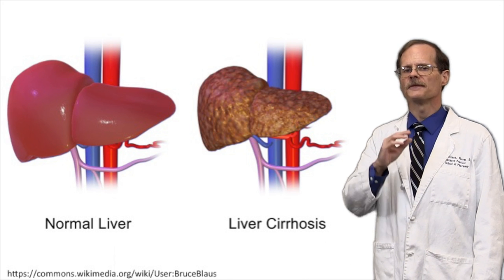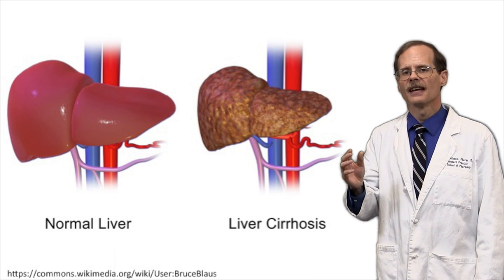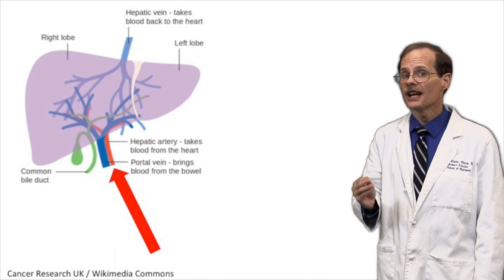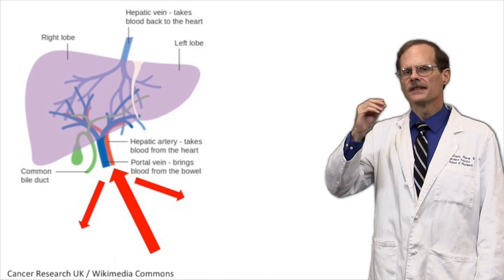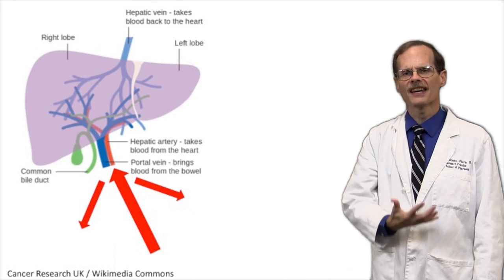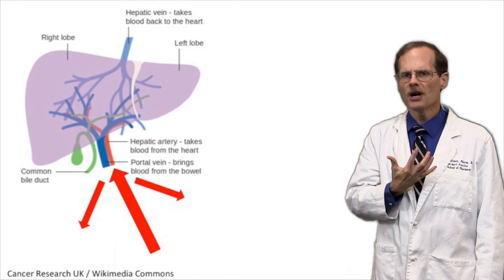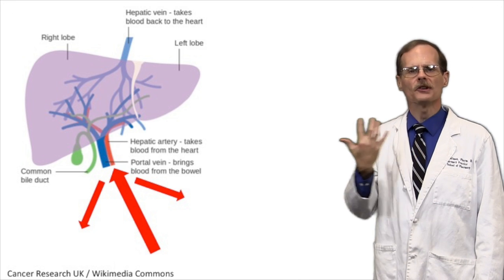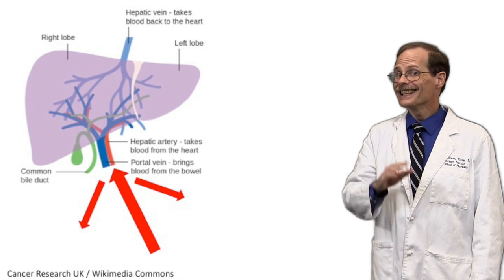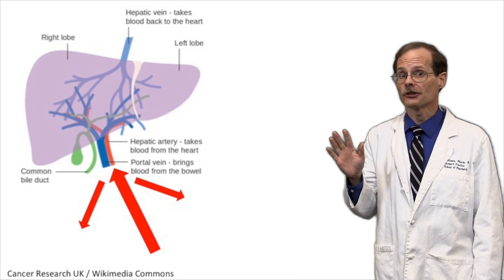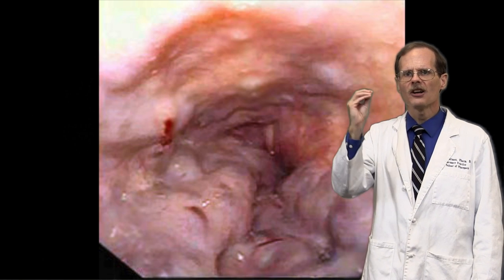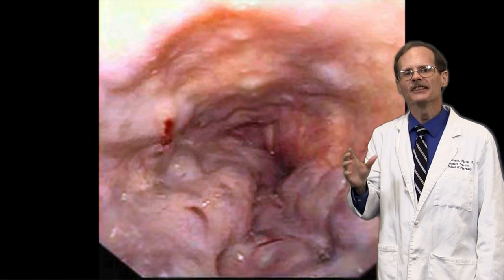The liver tissue becomes fibrotic and may actually shunt blood coming toward it away from the liver. Sometimes this resistance causes blood to back up so much that it gets forced into smaller veins in other parts of the body that aren't accustomed to so much pressure. These veins sometimes swell and burst, leading to bleeding.